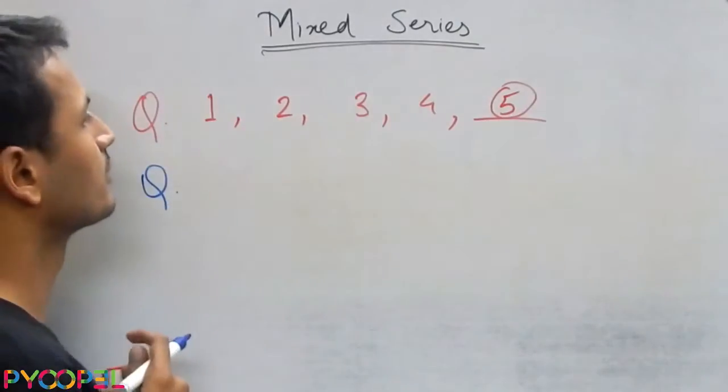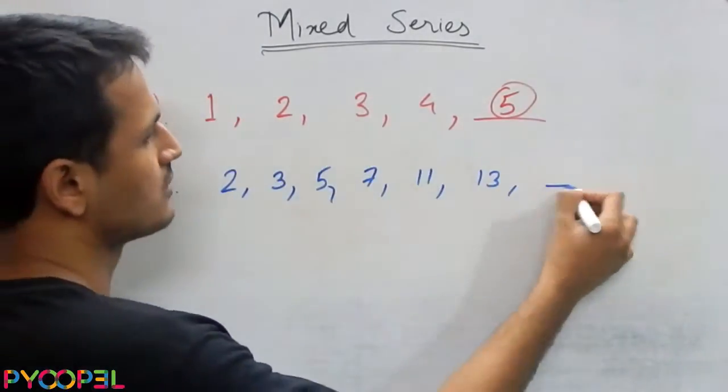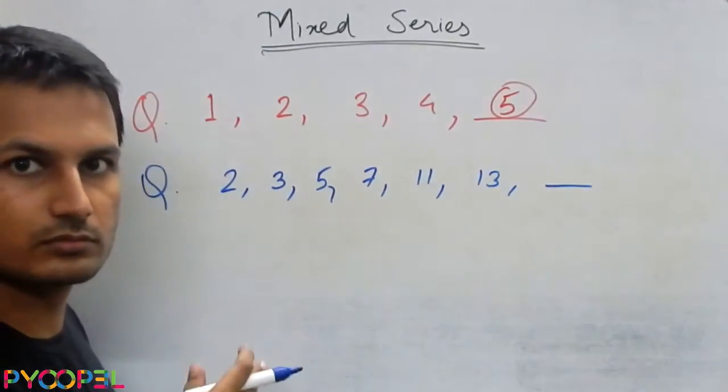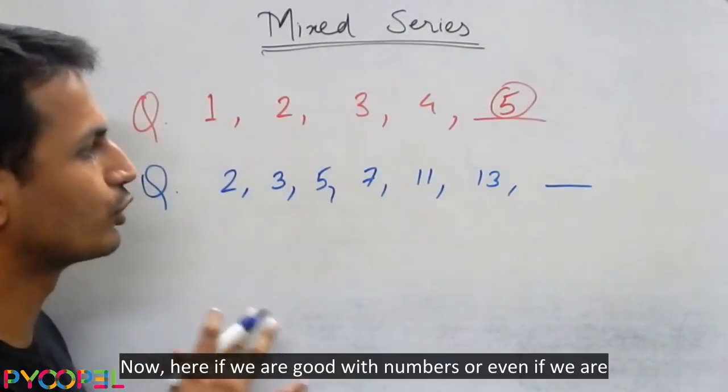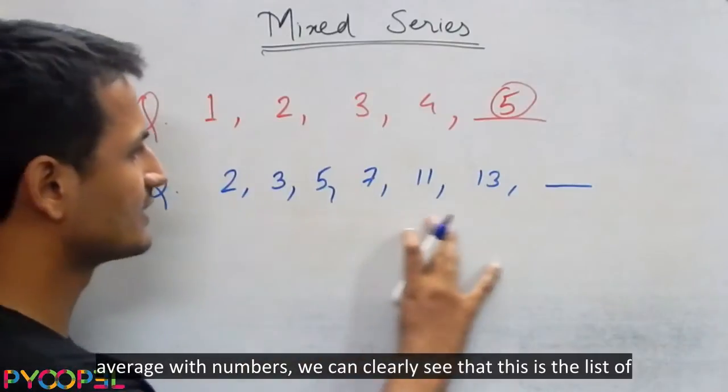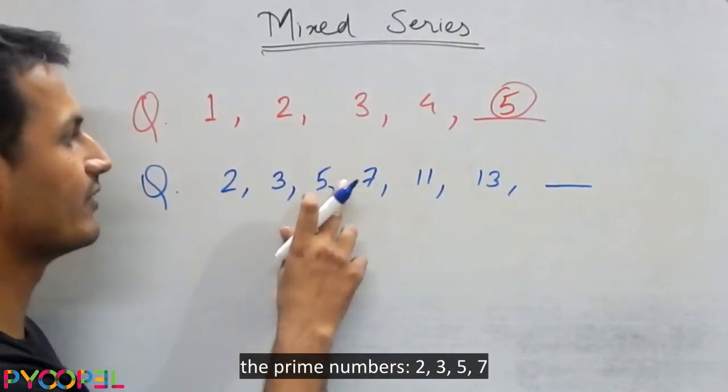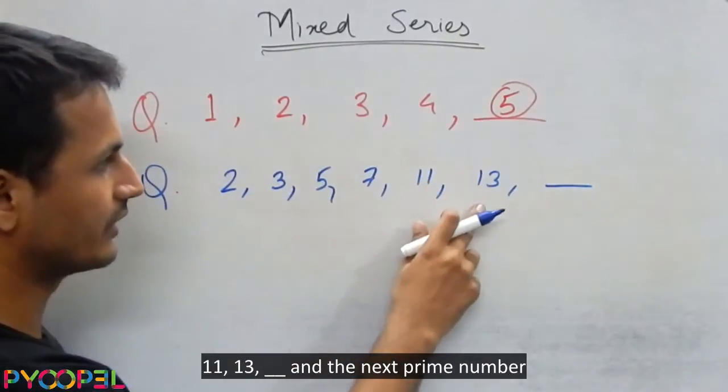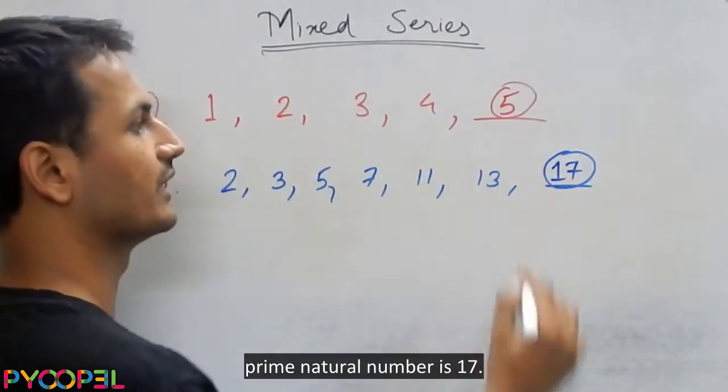Let's see. How about now? Here if we are very good with numbers or even if we are average with numbers we can clearly see that this is the list of the prime numbers 2, 3, 5, 7, 11, 13. The next prime number is 17.